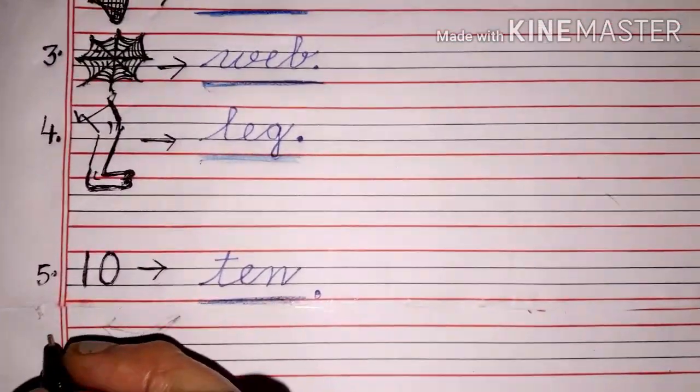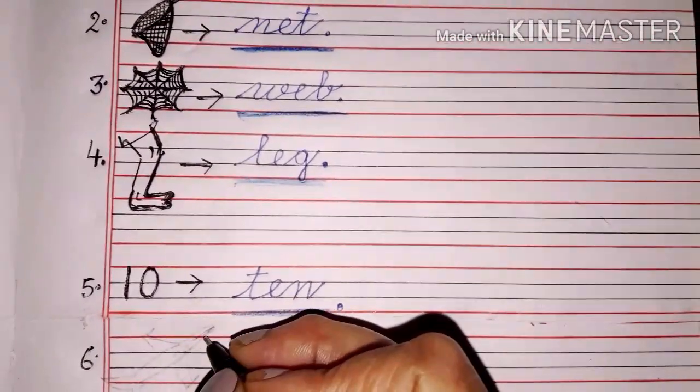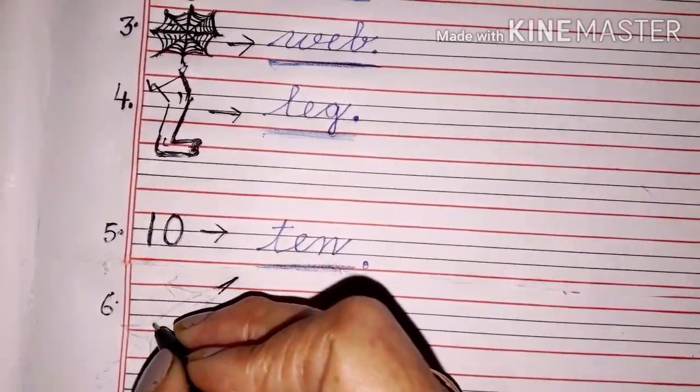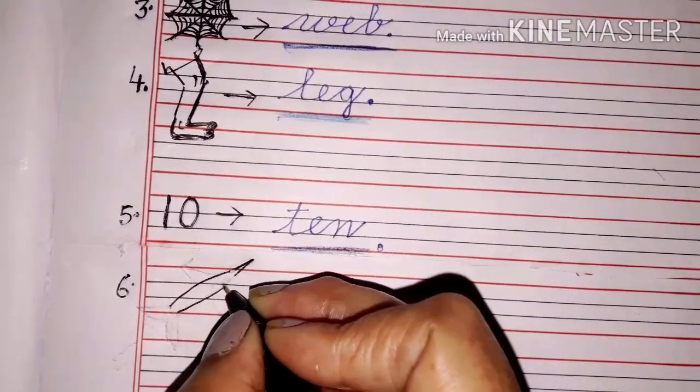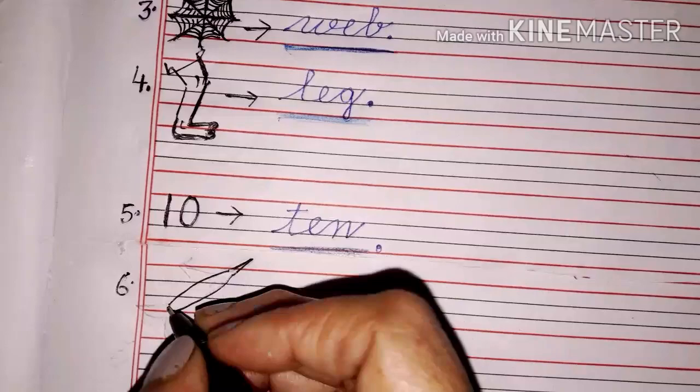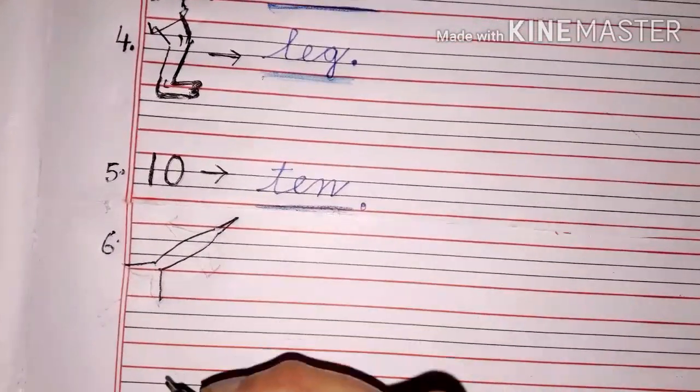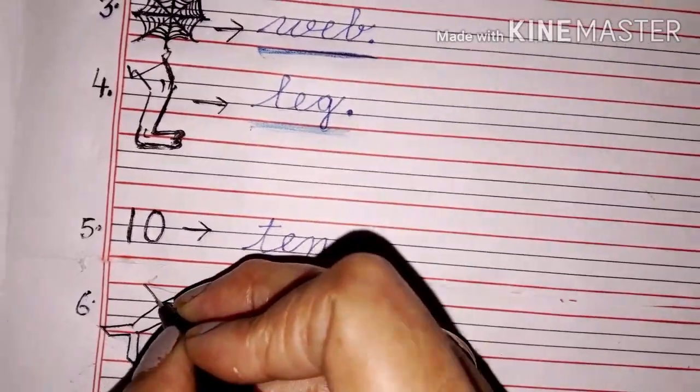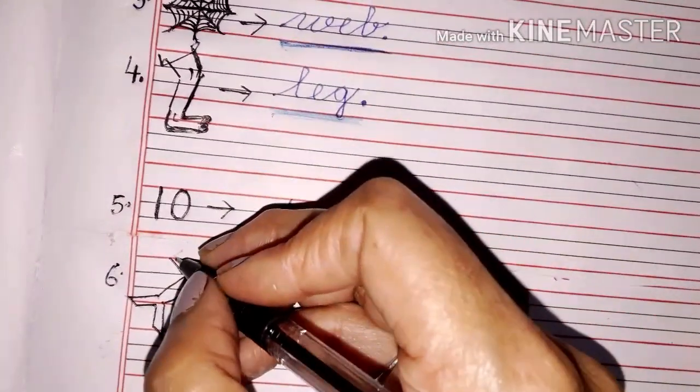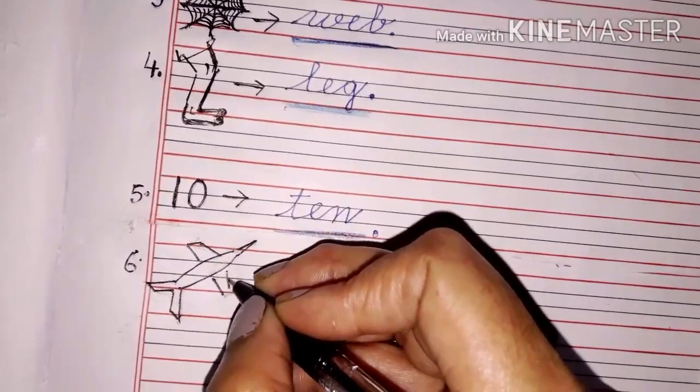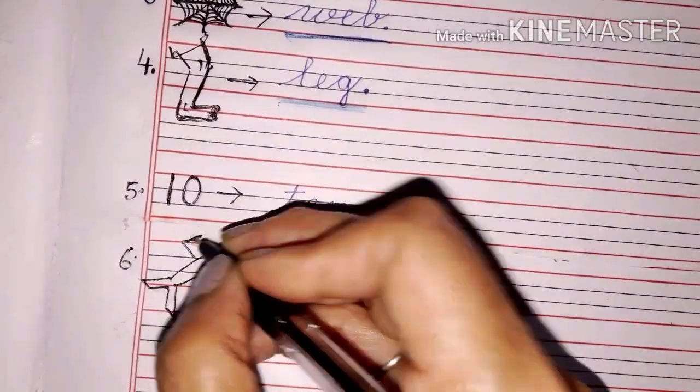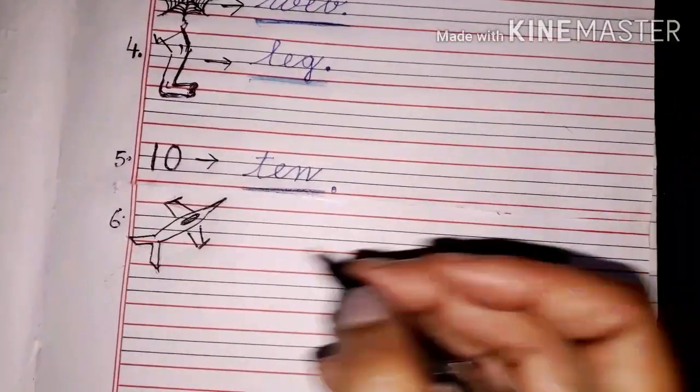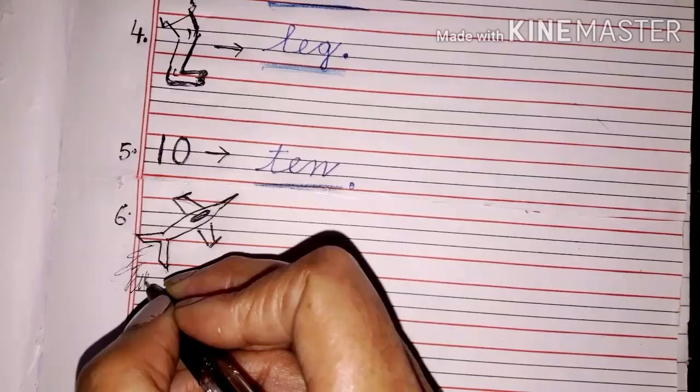Now children come to the next picture number six. Firstly I have to draw a very thin triangle here. Then two curves facing to each other. Then two slanting line like this. Again two slanting line. This is the jet.